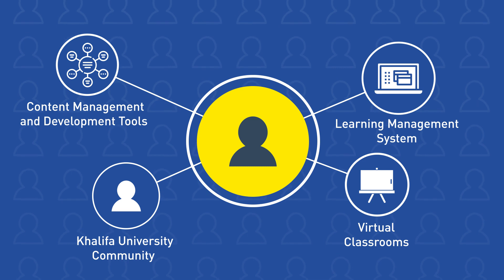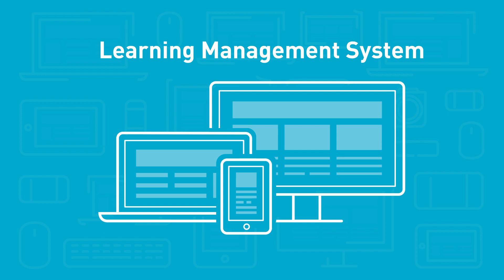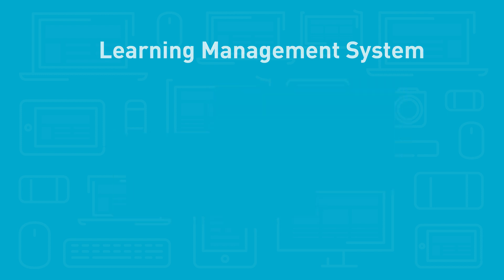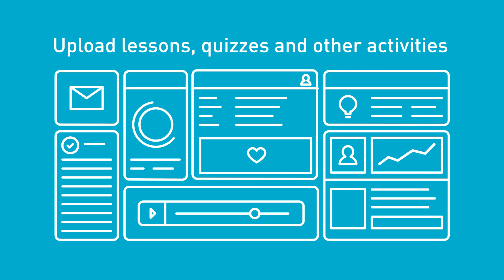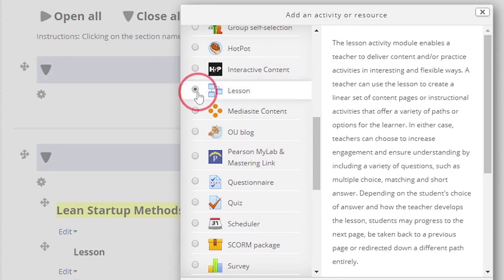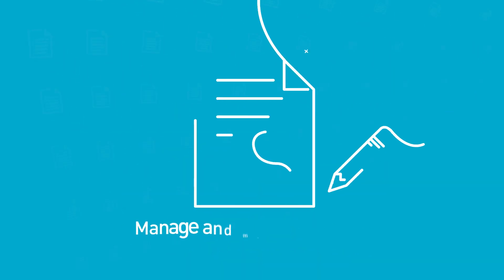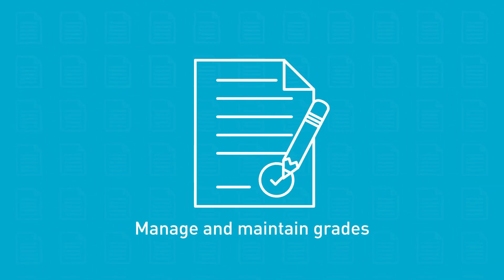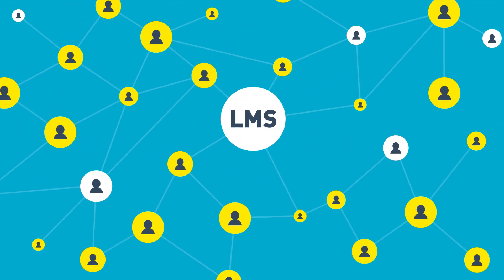The second layer is its Learning Management System, or LMS, which is at the core of our learning ecosystem. It gives faculty the tools they need to effectively manage their online courses. They can upload lessons, quizzes and other activities for students to complete, initiate discussion boards and forums to allow students to participate in group discussions, and manage and maintain grades, so students can know how they are performing at any point in the semester. The LMS is also linked to the university's student information system.